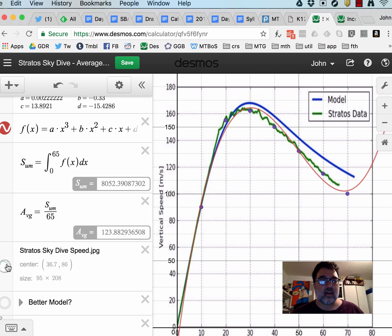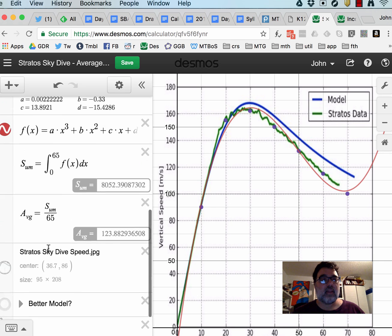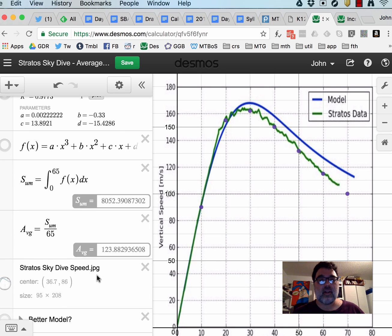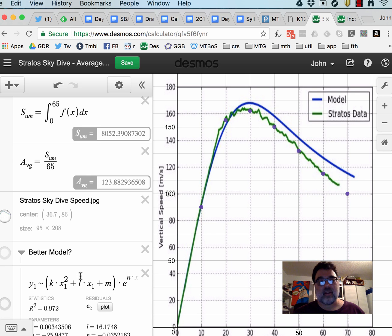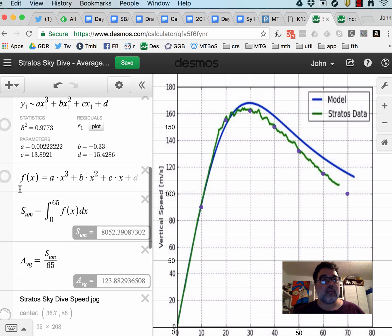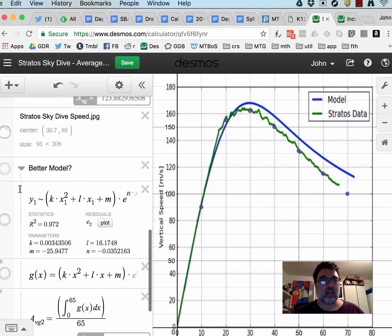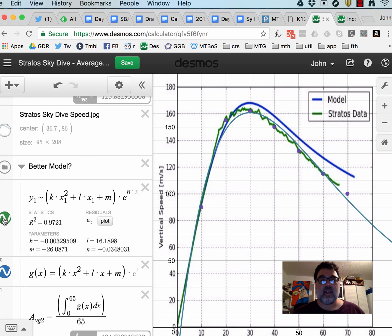In Desmos, when you add a graph, it shows up as an item over here, so you can show and hide it. Okay, and then I got to wondering, could I find a better model? This kind of leveling out, to me, is usually exponential. So I thought, what if I tried to model it as a quadratic times an exponential? So I'm going to go turn off the, oh, those are the points, that's all right, leave on.